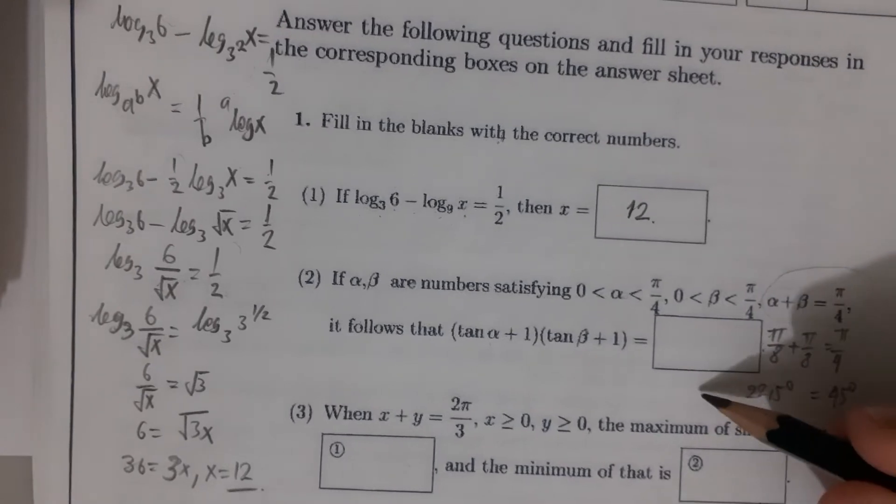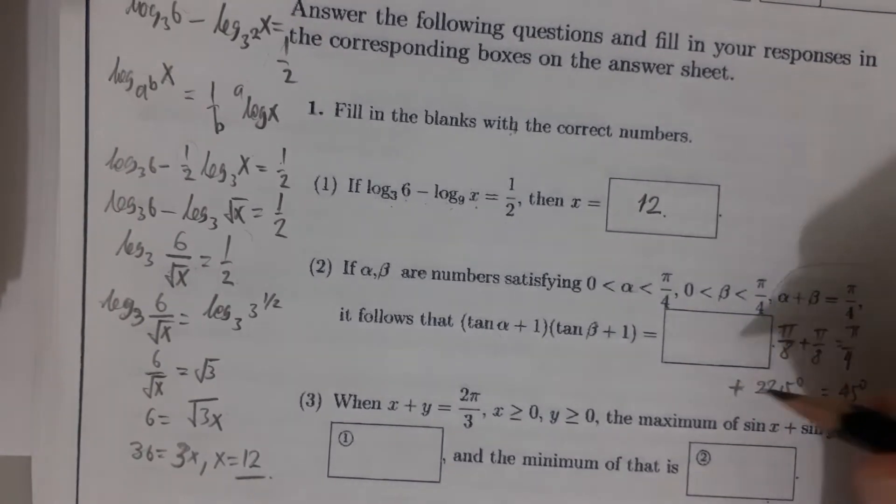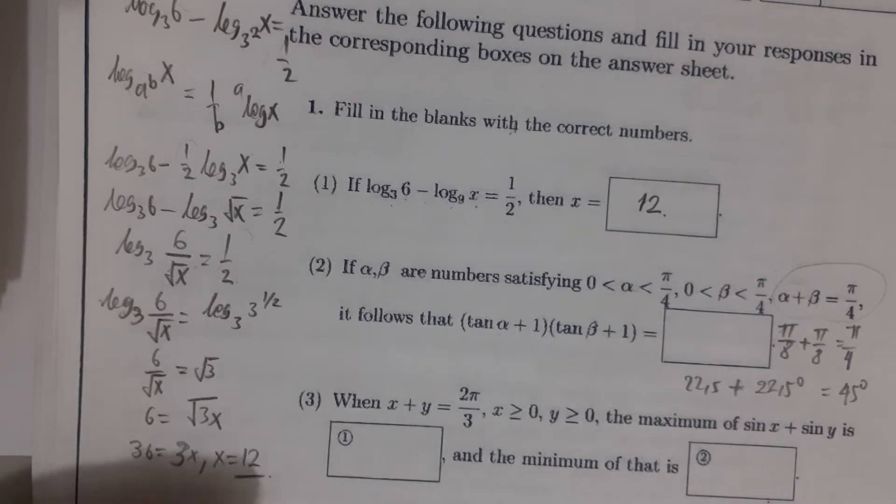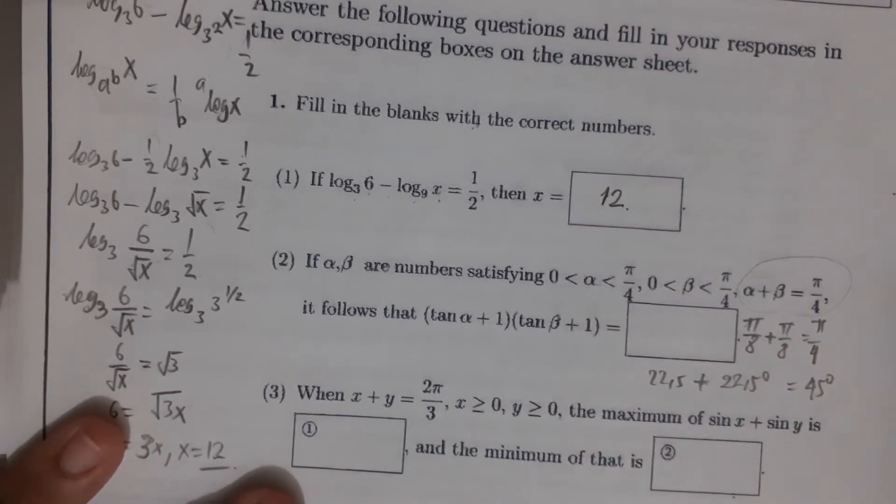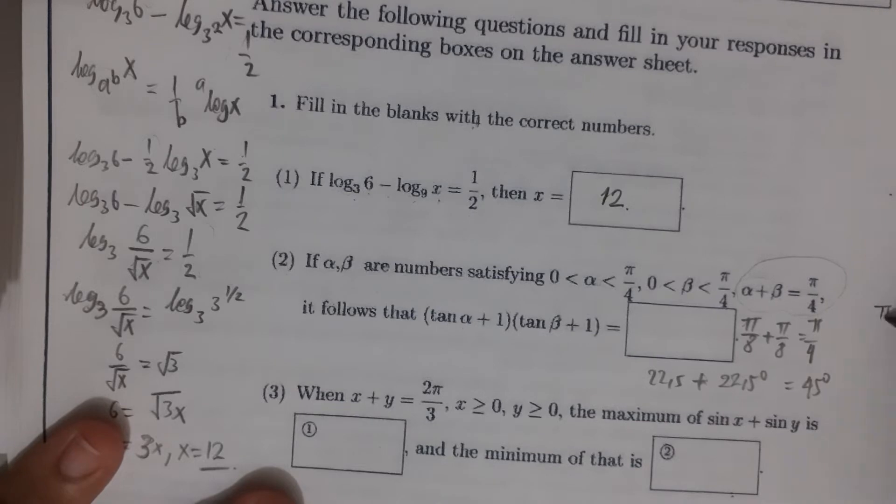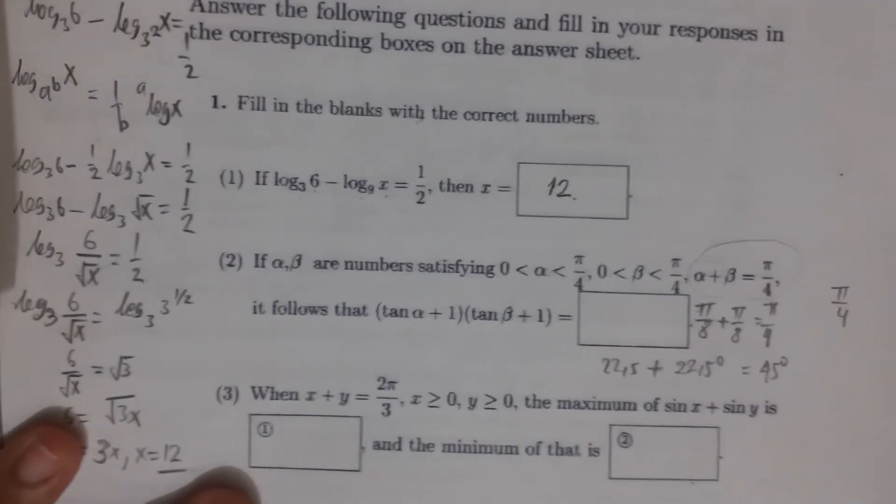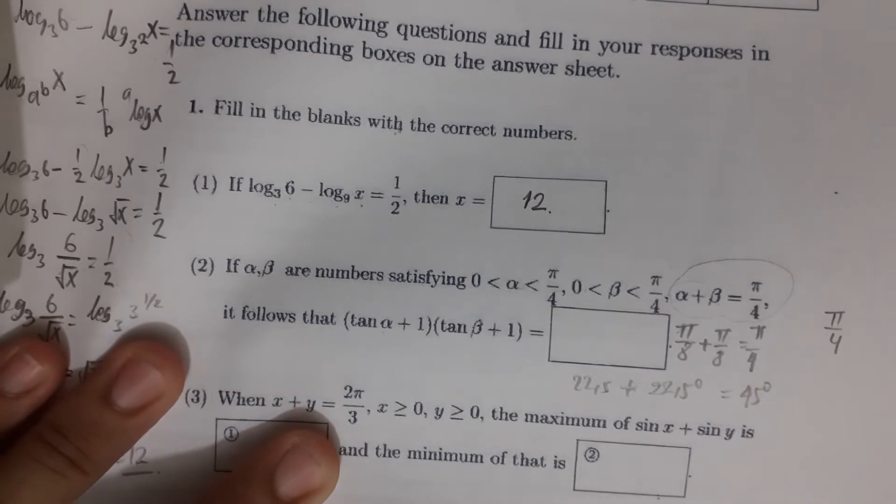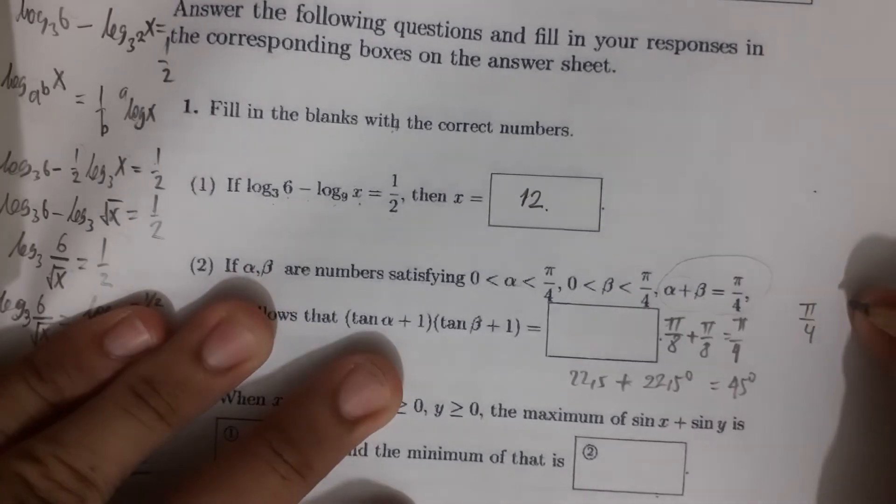So 22.5 + 22.5 = 45. If you don't know how radians work, it's simple: just multiply π/4 by 180/π, which equals 45 degrees.